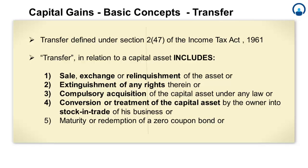Going back to the definition, it says transfer in relation to a capital asset includes sale, exchange, or relinquishment of the asset. Sale means exchange of a commodity for money — selling something. A sale takes place when the ownership in the property is transferred for a price. For example, Mr. A sells his house located in Mumbai to Mr. B for Rs. 50 lakhs. This is a transaction of sale and would be considered as transfer of a capital asset.